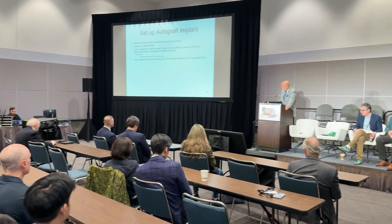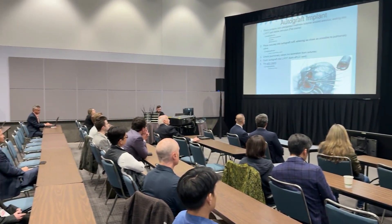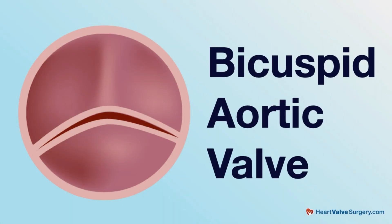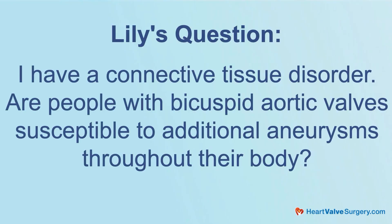Good to see you again, Adam. So there's a lot of new research and data coming out here. We're also getting questions from patients all over the world. This comes at us from Lily, all about connective tissue disorder and bicuspid aortic valves. Lily asks: I have a connective tissue disorder. Are people with bicuspid aortic valves susceptible to additional aneurysms throughout their body?